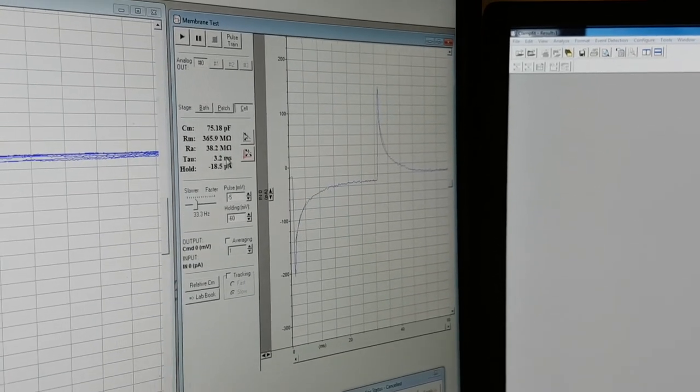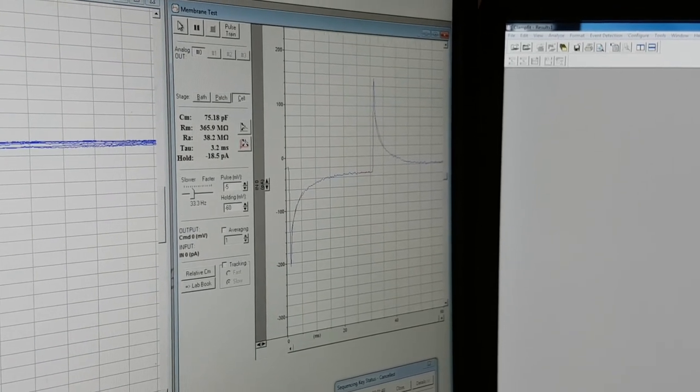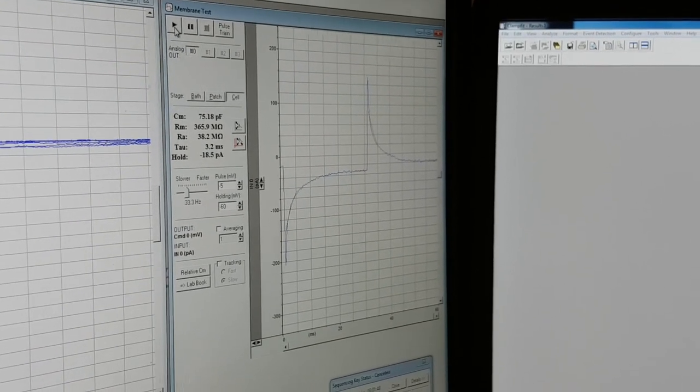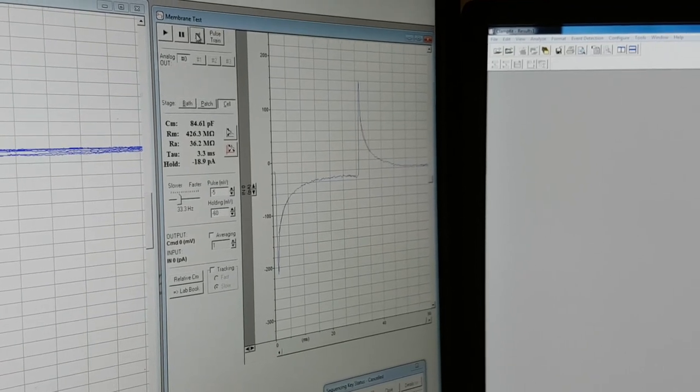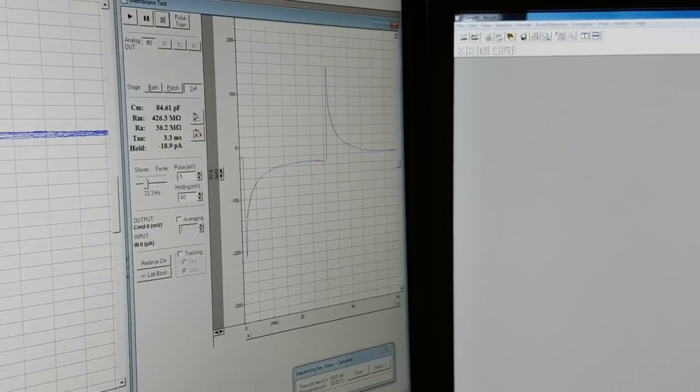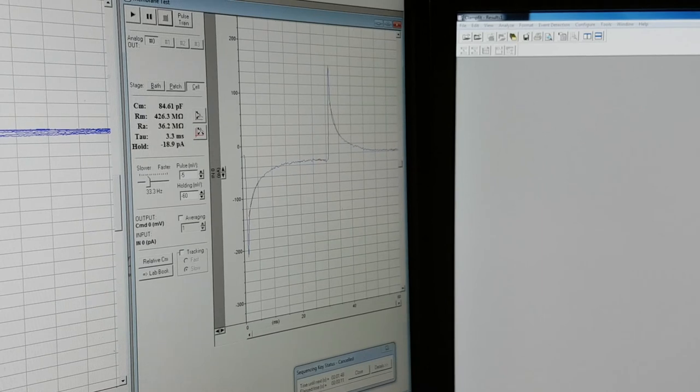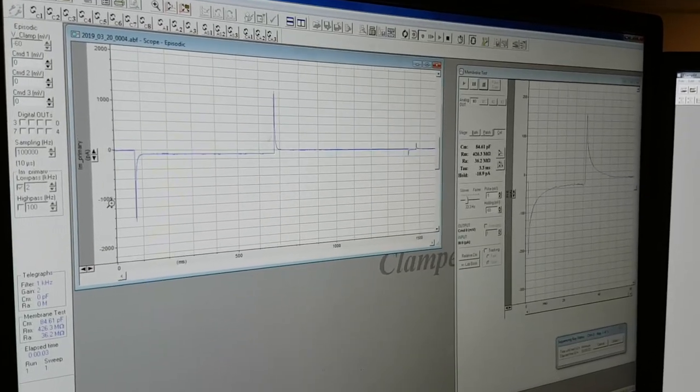In our voltage clamp experiments here, we will hold the membrane at negative 60 millivolts. Additionally, once we've broken into the cell, we can switch our membrane test to the cell mode and record the baseline parameters as seen on the screen. This includes the membrane capacitance, the membrane resistance, the access resistance, as was mentioned earlier, indicating the lower the better, typically, with a range of less than 40 mega-ohms being satisfactory and less than 30 mega-ohms being considered good. Also, we can record the tau, which is also referred to as the decay time. If we are satisfied with these baseline parameters, we can then run an IV curve.